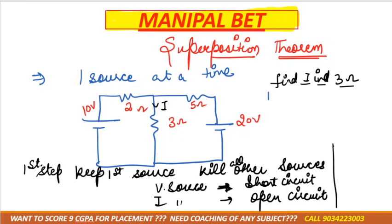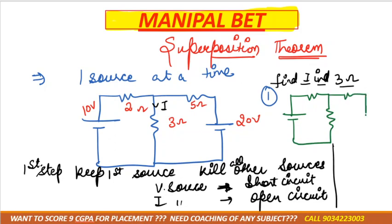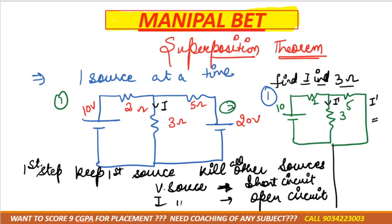So I'll draw the first step diagram. In that case, the 10 volt source and the 20 ohm short circuit — the rest of the diagram would be the same. Now mark i-dash. We need to calculate i-dash. You can use mesh analysis or nodal analysis — either way you will be able to calculate i-dash.